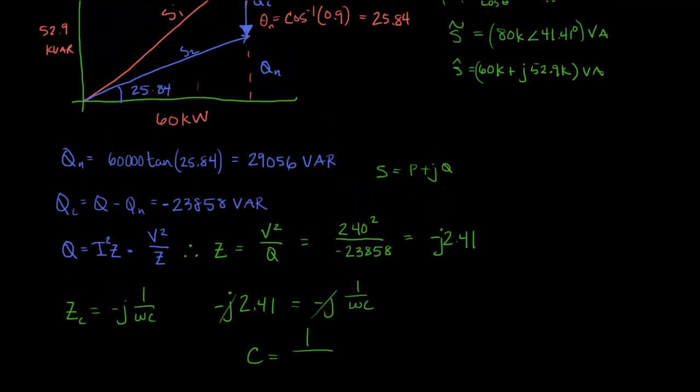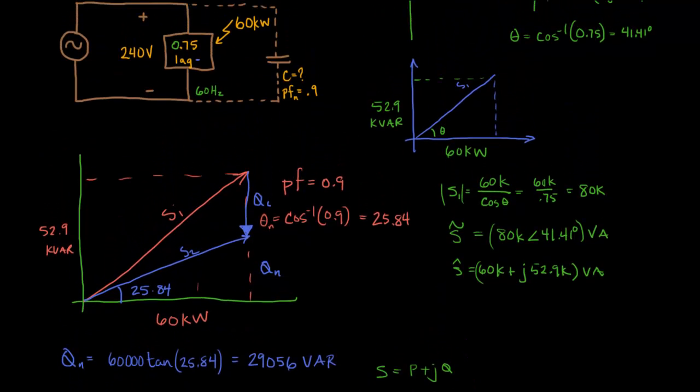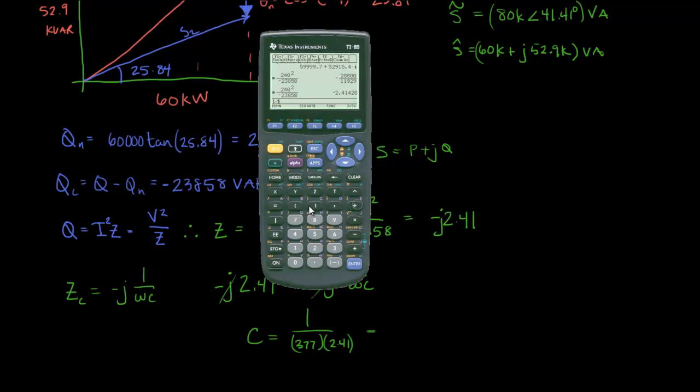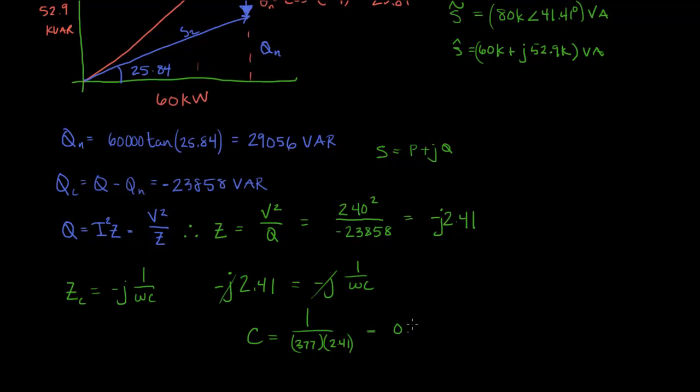And switch this around here and I'll get C equals 1 over omega times 2.41. Remember, our circuit here is a 60 hertz signal and the frequency of 60 hertz is 377 times 2.41. And if you plug that into the calculator, 1 divided by 377 times 2.41, you will get 0.001101.